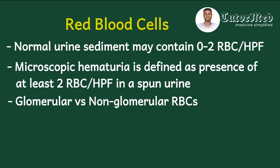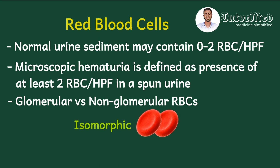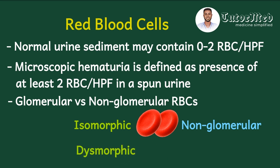Once red blood cells are seen, our job is to find out whether it is glomerular or non-glomerular hematuria. Non-glomerular hematuria means bleeding outside the glomerulus — from anywhere from the tubules through to the urethra — and here the red blood cells will be isomorphic, meaning the same biconcave shape as red cells in the blood. In glomerular hematuria, the red blood cells show various abnormal shapes because they get damaged as they pass through the glomerular membrane; these are described as dysmorphic red blood cells.